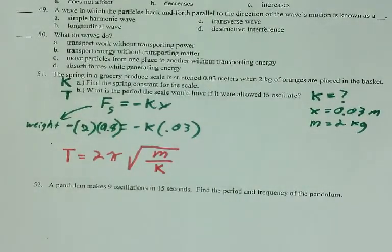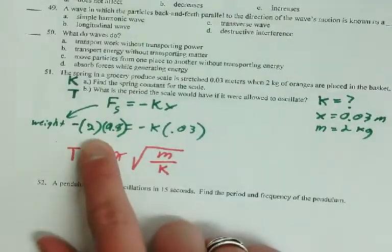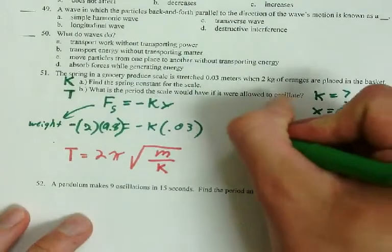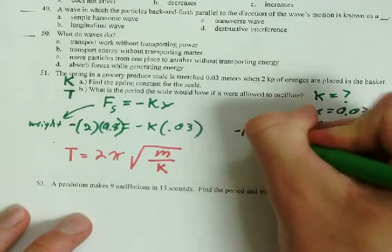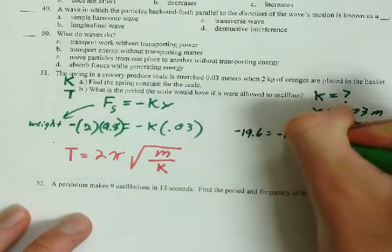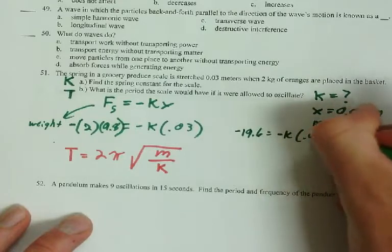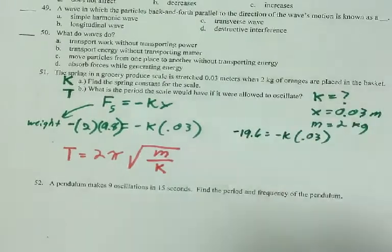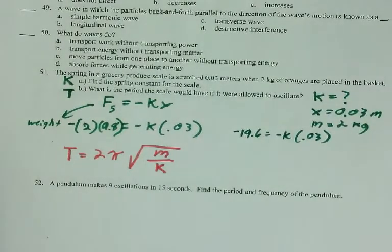So once we've got our two equations ready to go. So, negative 19.6 equals negative k times 0.03. Divide 0.03 to both sides.